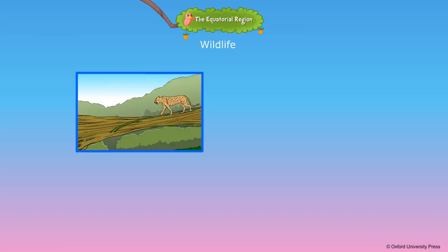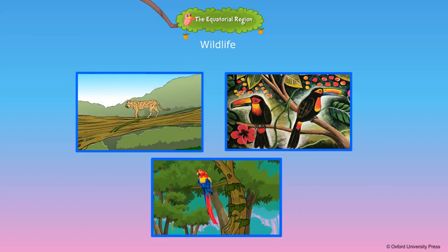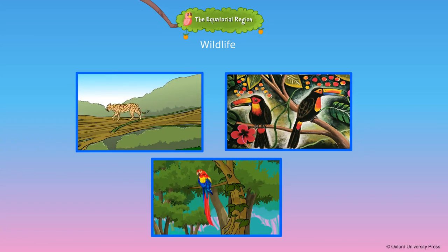Animal life is also varied in the tropical rainforests. Jaguar and birds with bright feathers, such as macaw and toucan, are found in these forests. Monkeys, apes, sloths, mosaic frogs, and anaconda are also found here.